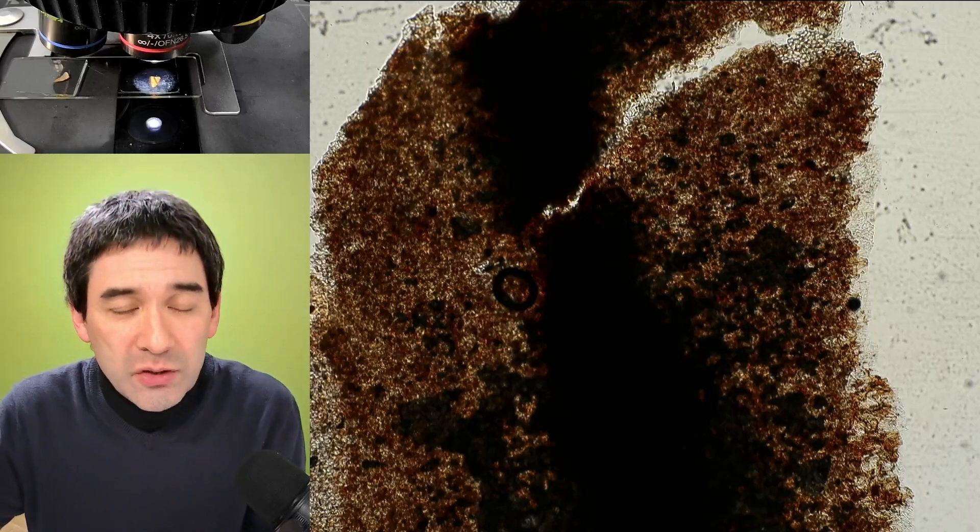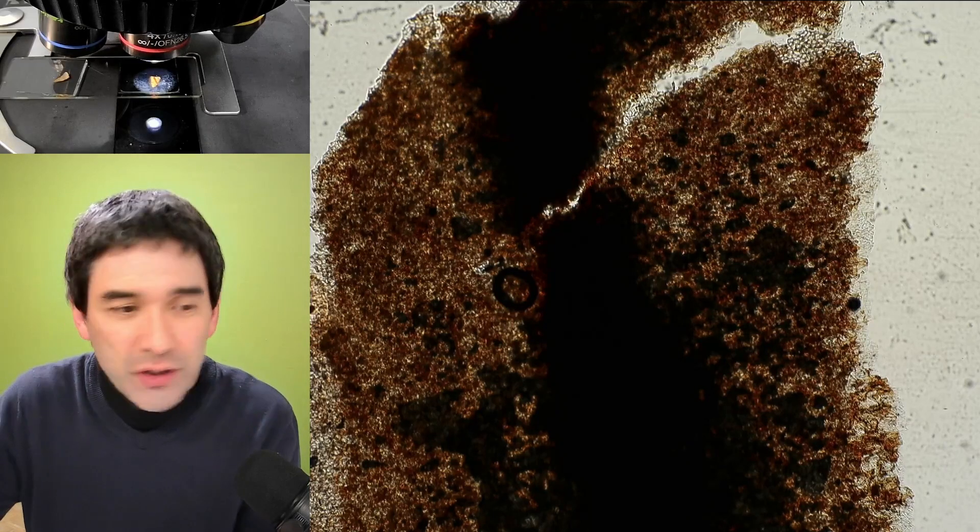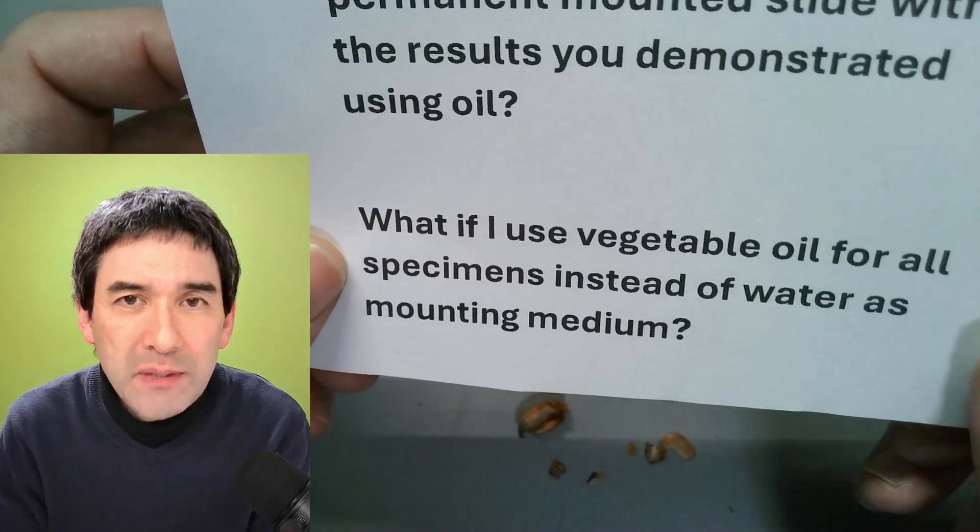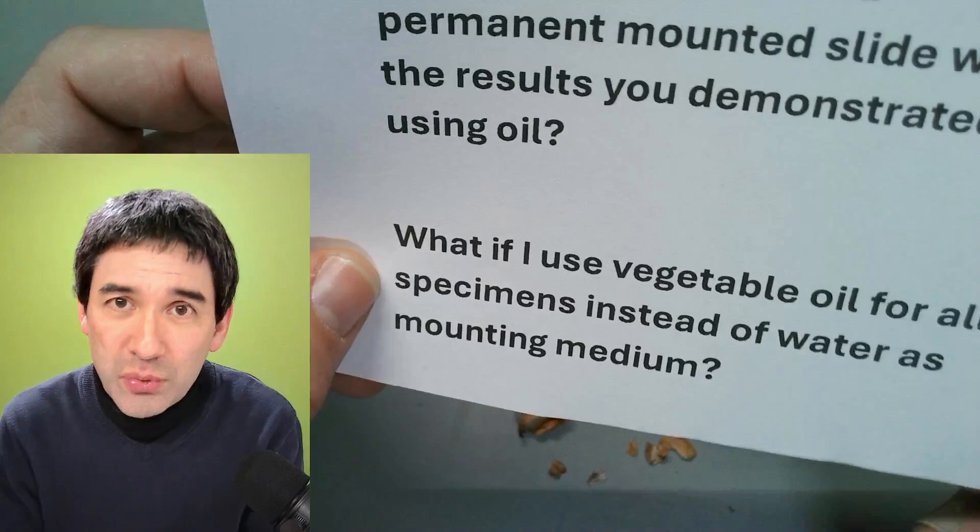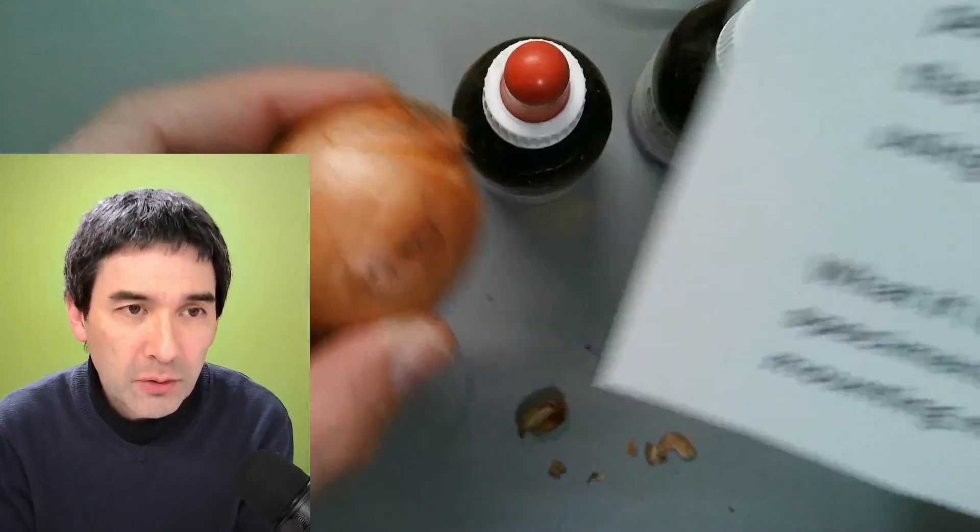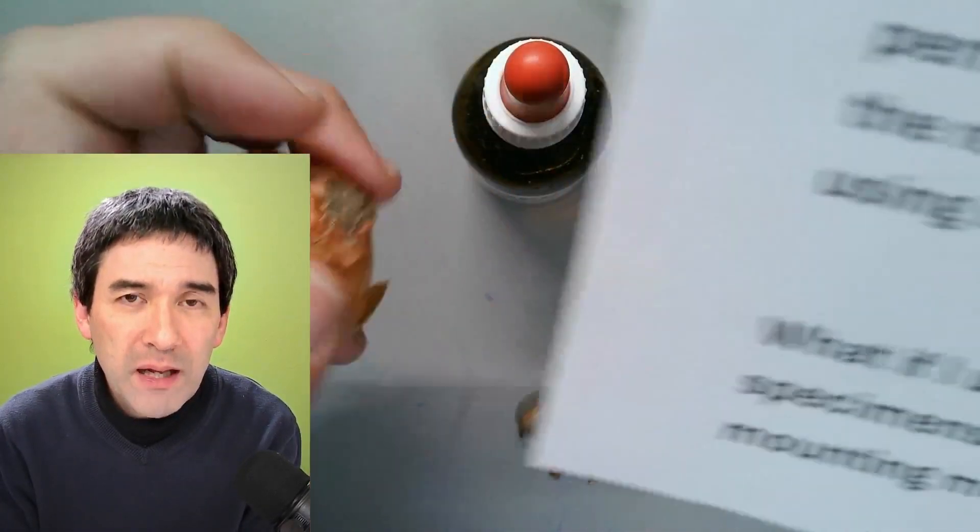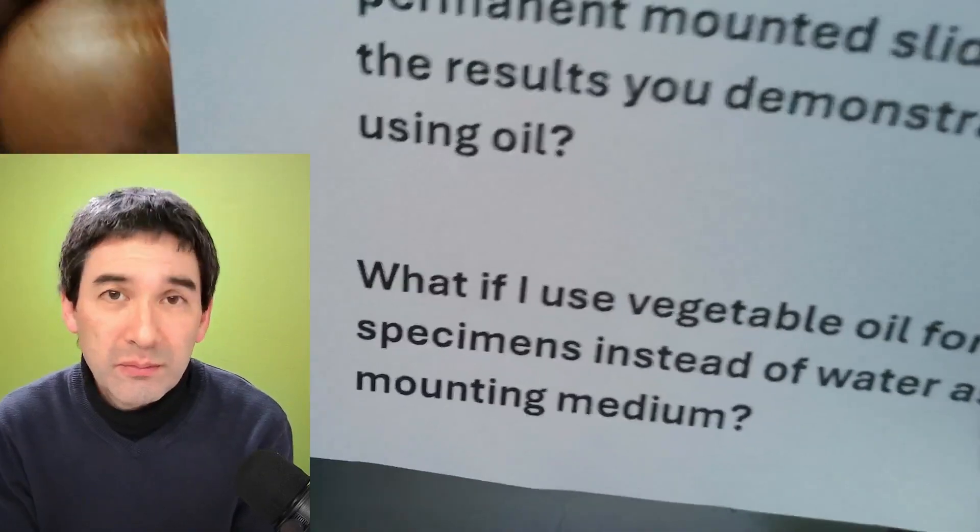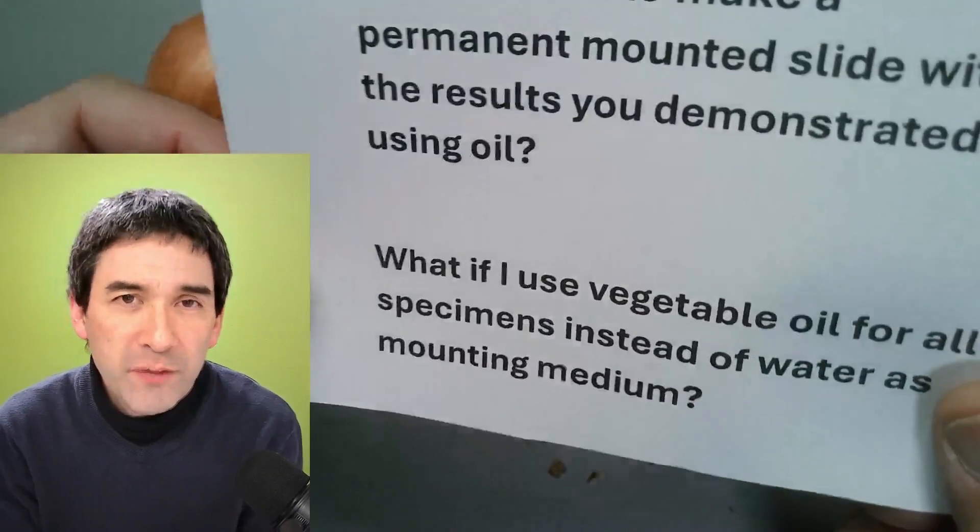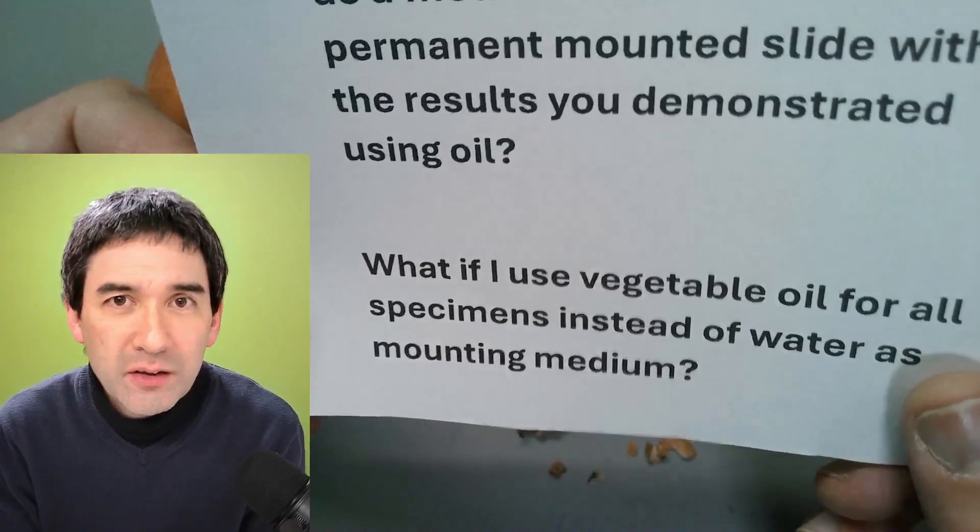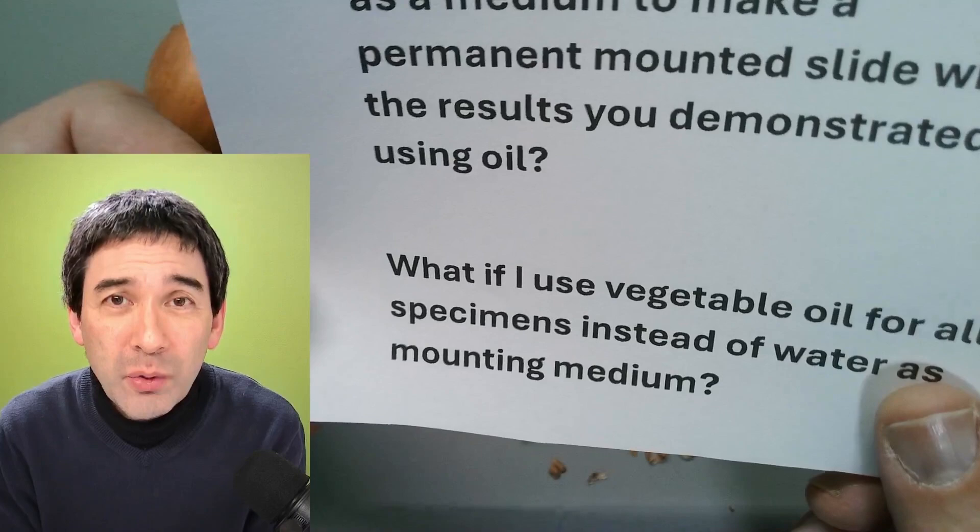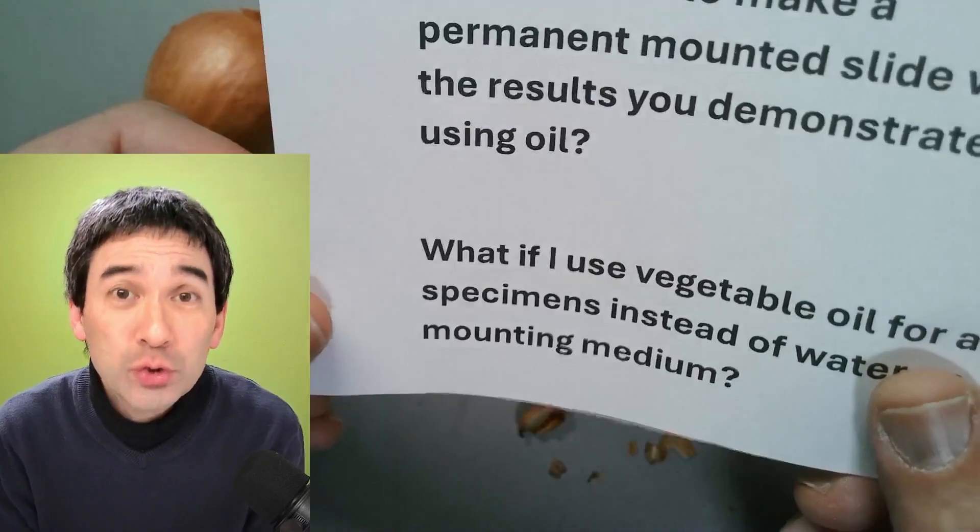So I would now like to answer the last question that I've got here, and that is, what if I use vegetable oil for all specimens instead of water as a mounting medium? Because yesterday I used vegetable oil to observe the onion skin here and I compared it also to water. And the question now is, if vegetable oil works, why not always use it? And the short answer is because vegetable oil only works well for those specimens that are completely dry.